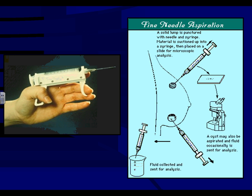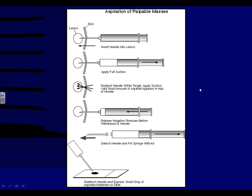A little bit about FNA first, since this is your first introduction to some FNA procedures. FNAs of palpable lesions: you put the needle into the lesion through the skin while holding the lesion with your non-dominant hand. You use your dominant hand to hold the needle and syringe. I always have a little bit of suction in the syringe beforehand because I'm going to use that suction to help expel the cellular material onto the slide.